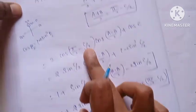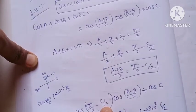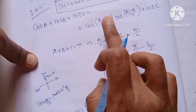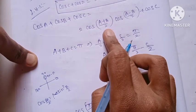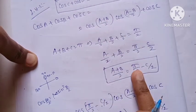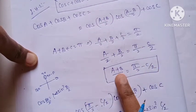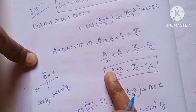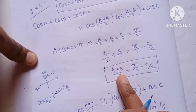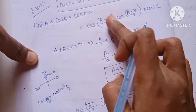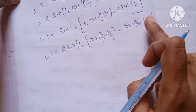Next, cos(pi/2 minus C/2) is replaced by cos(A plus B)/2, since A plus B)/2 equals pi/2 minus C/2. We substitute this replacement back into the expression.